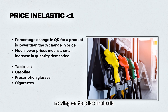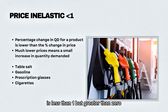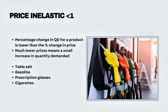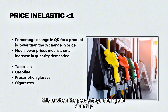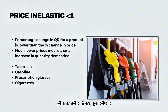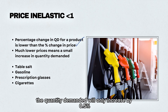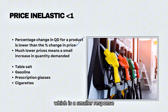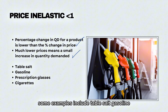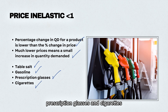Moving on to price inelastic. This is when the PED is less than 1 but greater than 0. This is when the percentage change in quantity demanded for a product is lower than the percentage change in price. So for example if the price was to decrease by 1%, the quantity demanded will only increase by 0.5%, which is a smaller response. Some examples include table salt, gasoline, prescription glasses, and cigarettes.